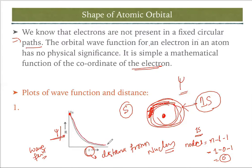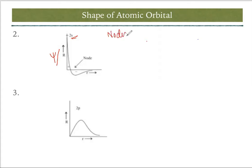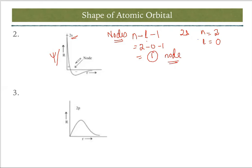Next we draw the 2s graph with ψ or r on the y-axis and r on the x-axis. The number of nodes is n − l − 1 = 2 − 0 − 1 = 1 node. So the graph starts from a higher point, cuts the x-axis once due to one node, creating a positive loop and a negative loop, and then meets r at infinity.